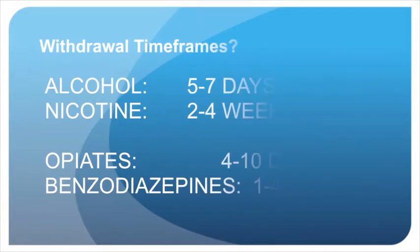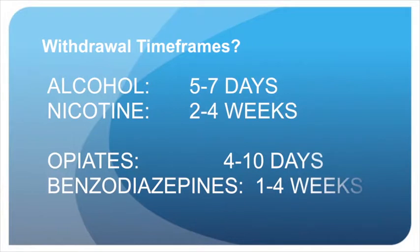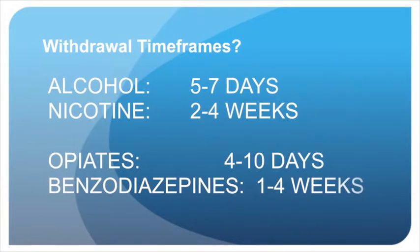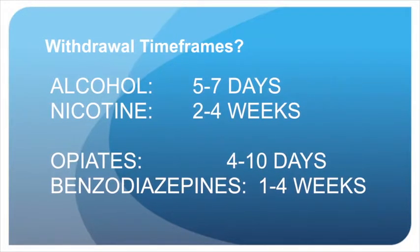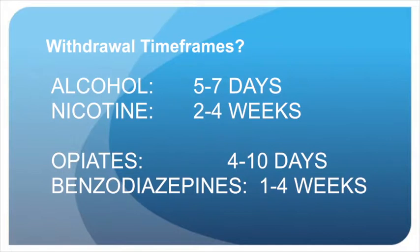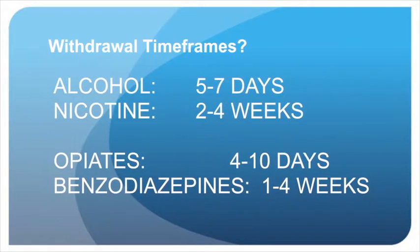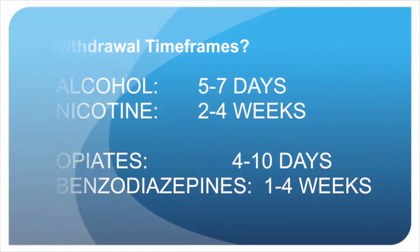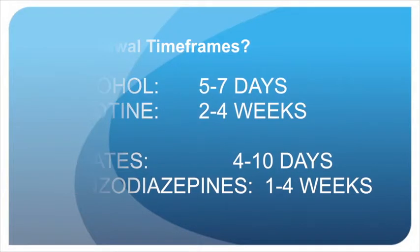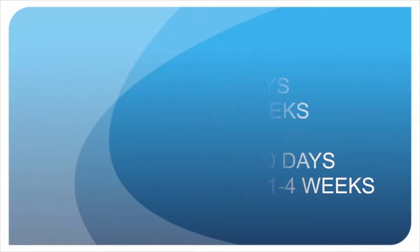What are the timeframes from the onset of withdrawal to the cessation of withdrawal effects? For alcohol it's approximately 5 to 7 days. For nicotine and cigarettes it's about 2 to 4 weeks. For the opioid medications it's about 4 to 10 days. And for the benzodiazepines such as diazepam and alprazolam it's 1 to 4 weeks.